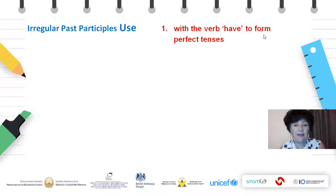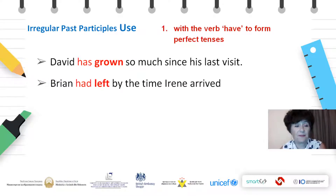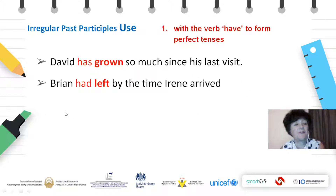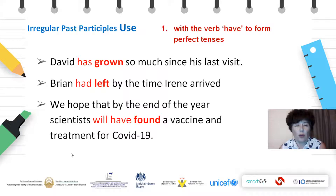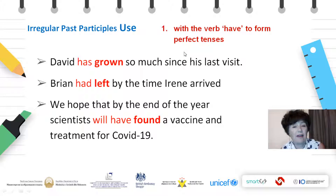Use one: with the verb have to form perfect tenses. Examples: David has grown so much since his last visit. Brian had left by the time Irene arrived. And we hope that by the end of the year, scientists will have found a vaccine and treatment for COVID-19. So we have has grown, had left, and will have found — which are present perfect, past perfect, and future perfect.